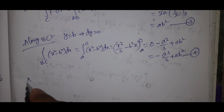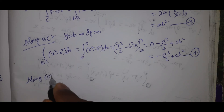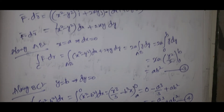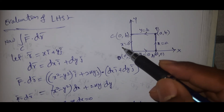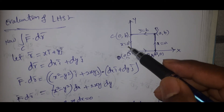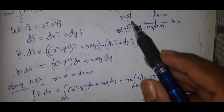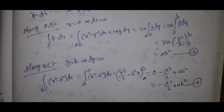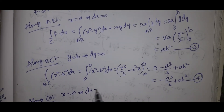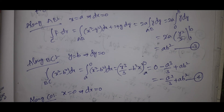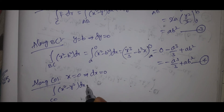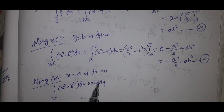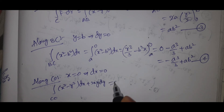Along CO: x = 0, y = 0. That implies dx = 0. Along CO: integral of (x² - y²)dx + 2xy dy = 0, since x=0 and y=0. This is equation number 5.